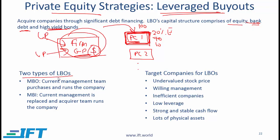There are two types of leveraged buyouts. In an MBO, the current management team purchases and runs the company. The more common type is an MBI — a management buy-in — where the current management team is replaced and the acquirer, the GP, brings in a new team to run the company. There might also be a combination where some existing management is retained and some comes in from the GP.